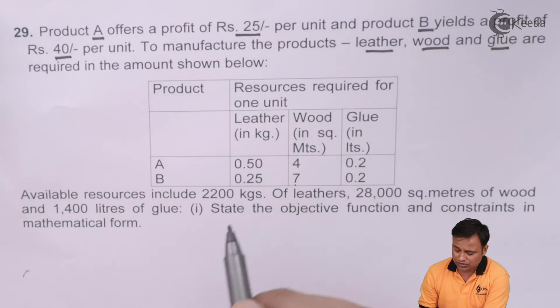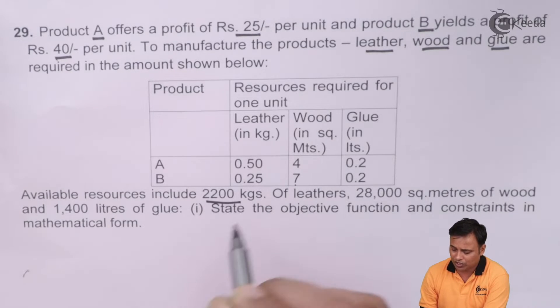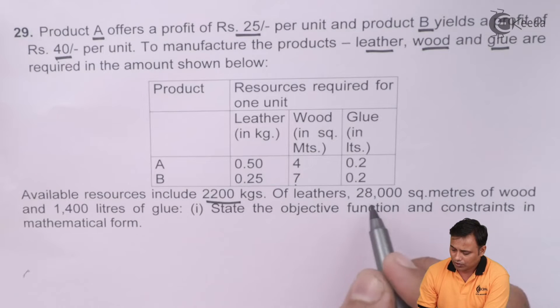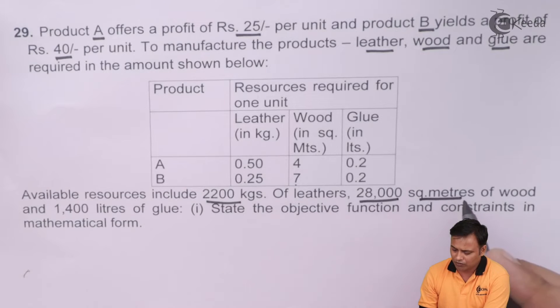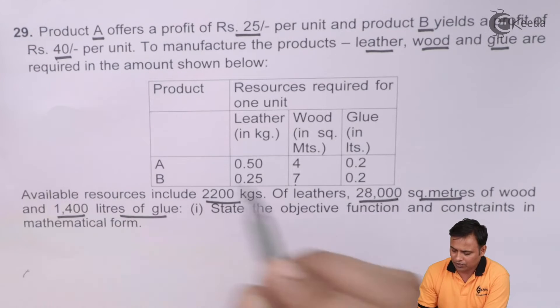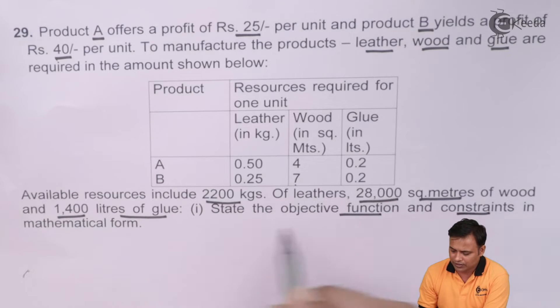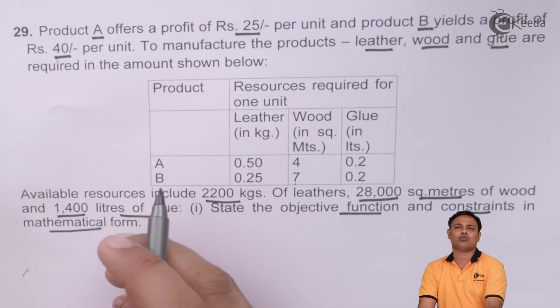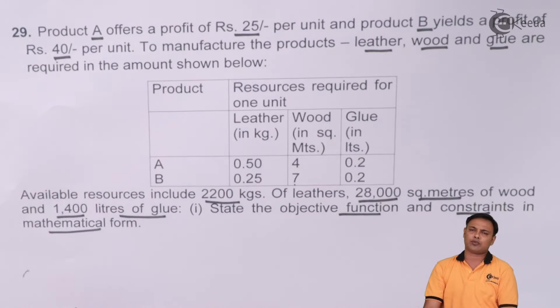What are my available resources? I have 2,200 kg of leather, 28,000 square meters of wood and 1,400 liters of glue. State the objective function and constraints in mathematical format. That is, we need to formulate this into a linear programming problem.